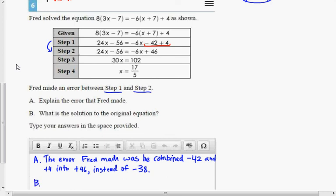Well, you're going to have a piece of scratch paper. So what I would do is right here on a piece of scratch paper, I would write 24x minus 56 equals negative 6x. And instead of plus 46, remember, it should be minus 38.